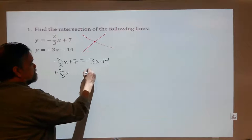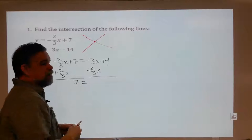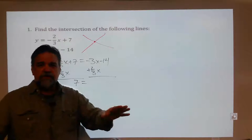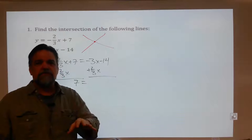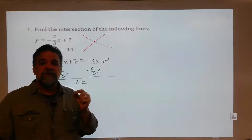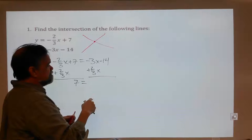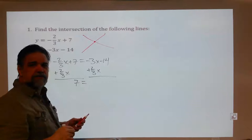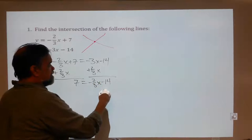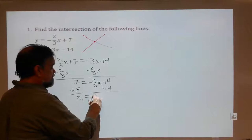I'm going to add two-thirds x to both sides, and this adds up to zero, so I get seven equals... A lot of times I see students looking at this and going, 'I hate fractions, I'm going to change this to a decimal.' Don't do that. The fractions are easier than the decimal. If you change it to a decimal, you're probably going to round somewhere, and another word for rounding is accepting a small error. We want to get the right answer. So negative three x plus two-thirds x is negative seven-thirds x minus 14.